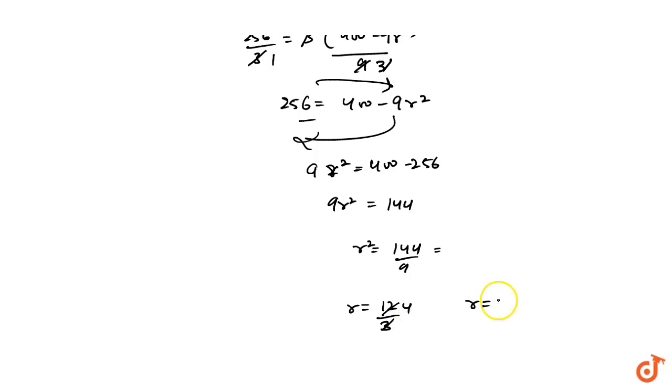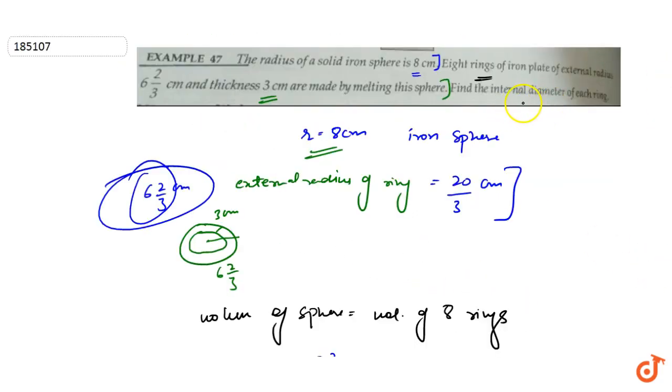We have internal radius which is 4 centimeters. We have to find the internal diameter, so radius is 4, then diameter will be 8 centimeters.